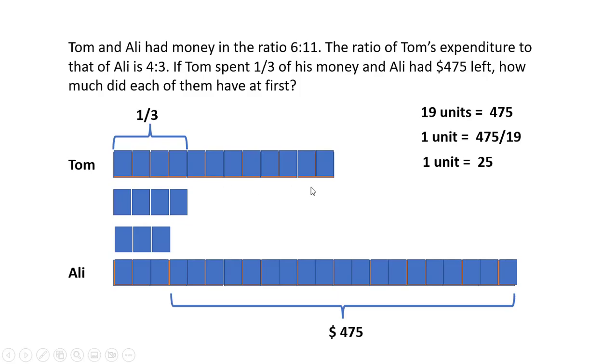Tom has 12 units here, so the money he has would be 12 times 25, which is 300. And Ali has a total of 22 units here, so Ali would have 22 times 25, which is equal to 550.